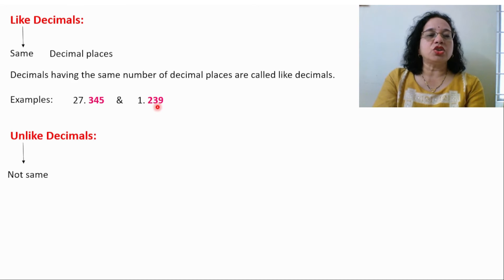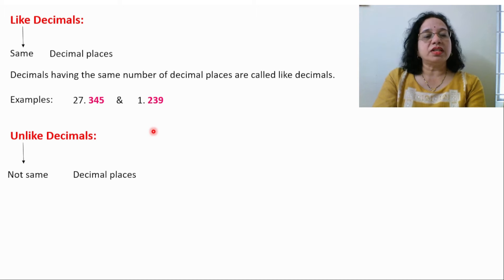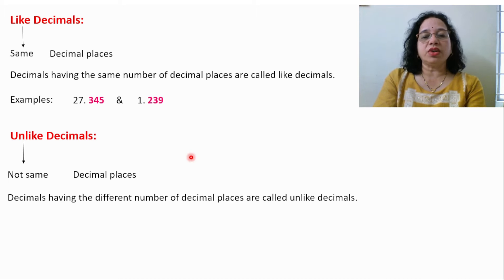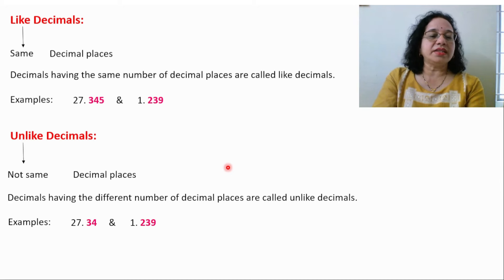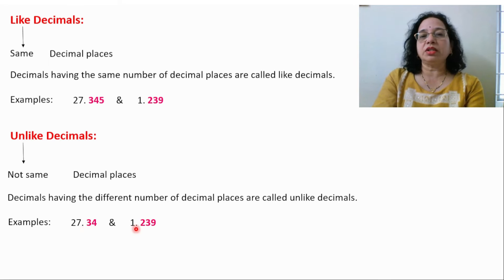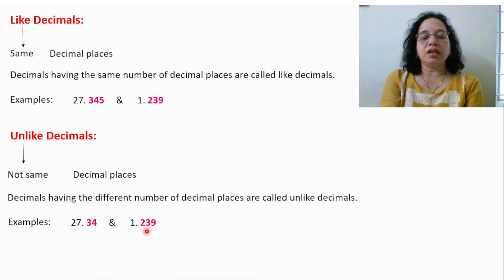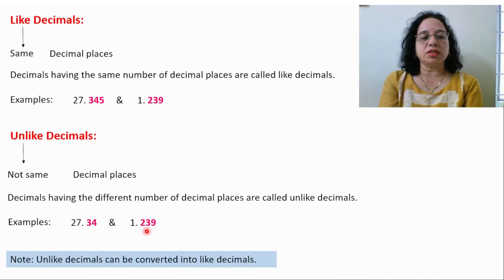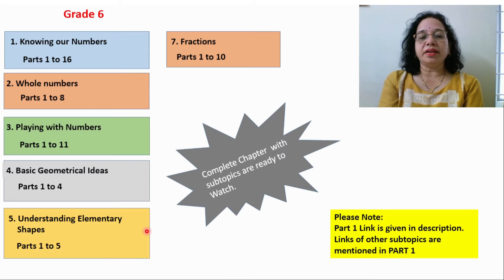Unlike means not the same — decimal places are not the same. Decimals having a different number of decimal places are called unlike decimals. For example, one decimal has 2 digits after the decimal point and another has 3 digits — so the decimal places differ in number. These are called unlike decimals. Unlike decimals can be converted into like decimals.